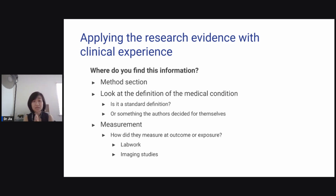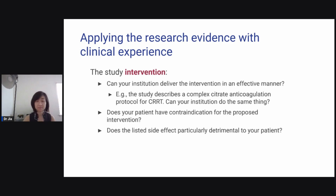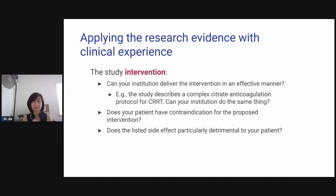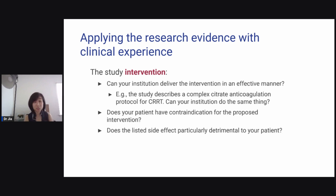Where do you find this information? The method section — look specifically at the definition of the medical condition. Is it a standard definition or something the authors decided for themselves? How did they measure the outcome or exposure? Think about lab work and imaging studies. Also consider the study intervention — can your institution even deliver the intervention in the same manner? For example, if the study describes a very complex citrate anticoagulation protocol for continuous renal replacement therapy, can your institution do the same thing?